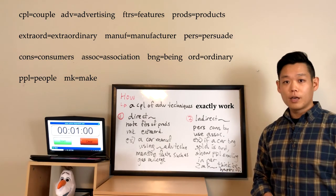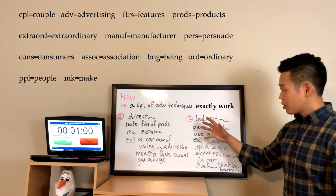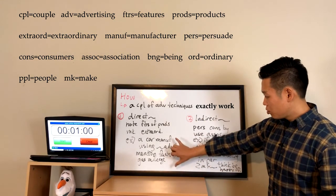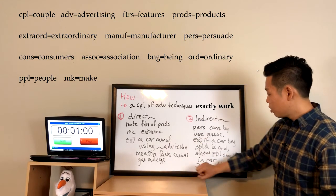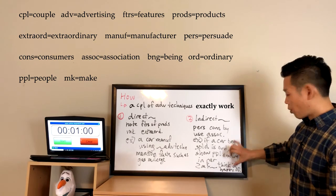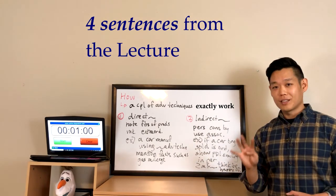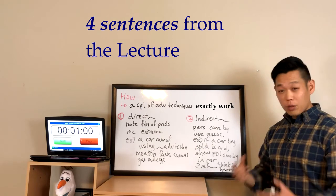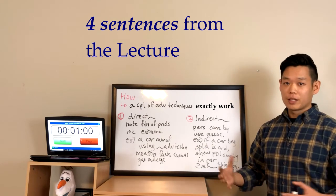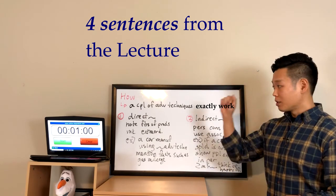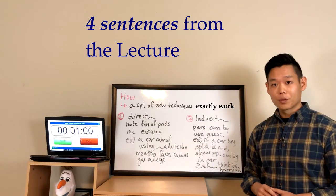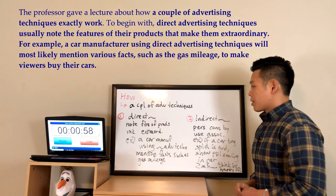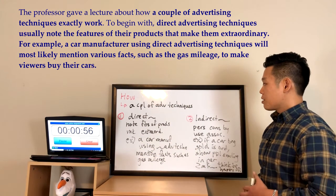Let's count the number of sentences: one, two, three, four — four complete sentences, or about five lengthwise. Now let's listen to the sample response. The professor gave a lecture about how a couple of advertising techniques exactly work.